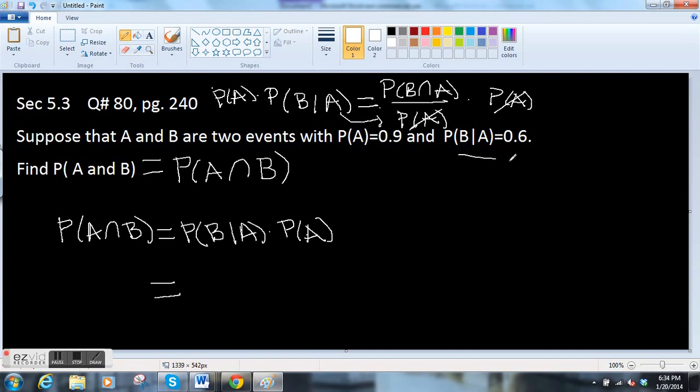So now things are fairly straightforward. We have this number here. B given A is 0.6. Probability of A is 0.9. So our answer is 0.54. So this was a straightforward multiplication, but remembering this equation might be a little tricky.